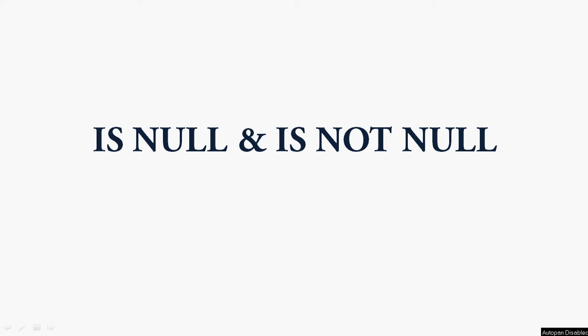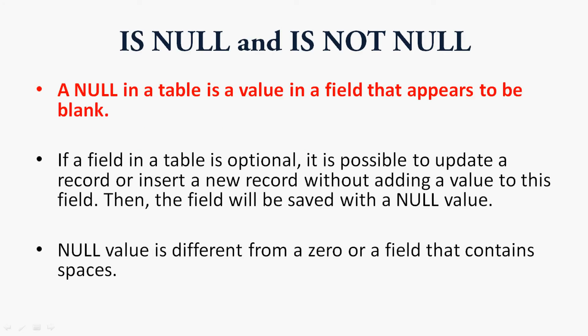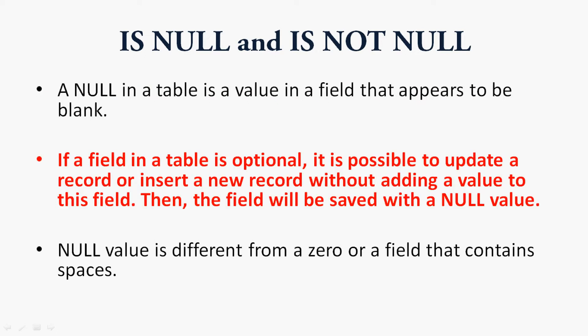Hi friends, welcome to Oracle tutorials. In this video we are going to see the IS NULL and IS NOT NULL operators. A null in a table is a value in a field that appears to be blank. If a field in a table is optional, it is possible to update a record or insert a new record without adding a value to this field — then the field will be saved with a null value.